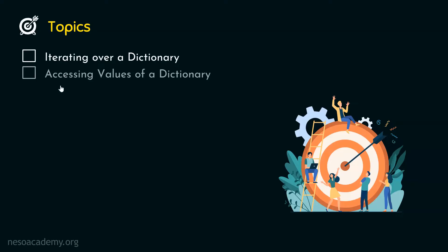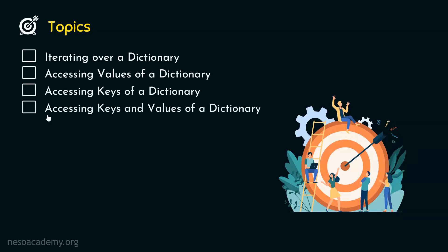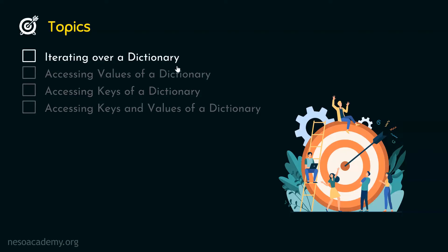The second topic is accessing values of a dictionary. The third topic is accessing keys of a dictionary. And the fourth topic is accessing keys and values of a dictionary. Let's get started with the first topic, that is iterating over a dictionary.